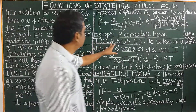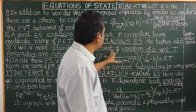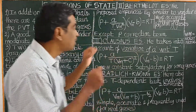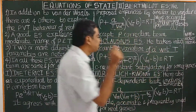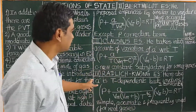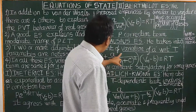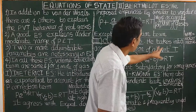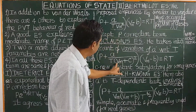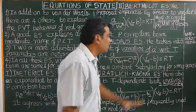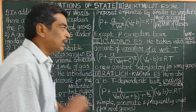The third equation of state is the Clausius equation of state. In this equation, he considered that the Van der Waals constant A is not truly constant but varies with temperature — A is temperature dependent. He proposed: P + A/[T·(Vm + C)²] · (Vm − b) = RT, where C is a new constant. This equation of state is satisfactory for some real gases, but not all.